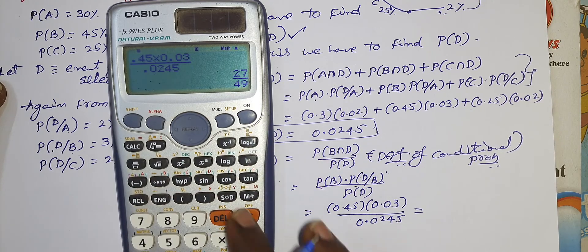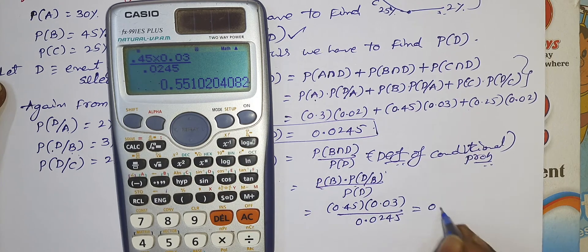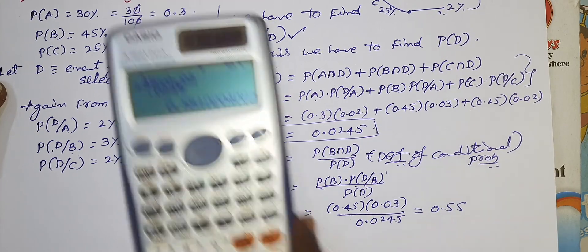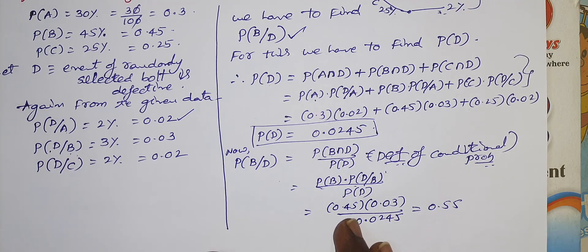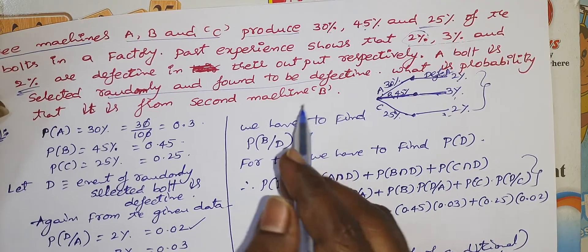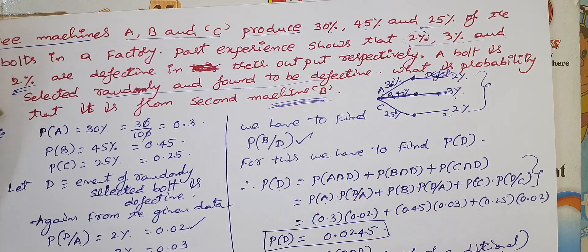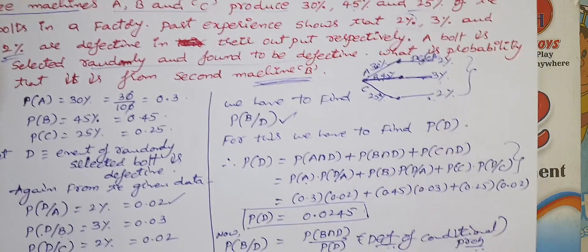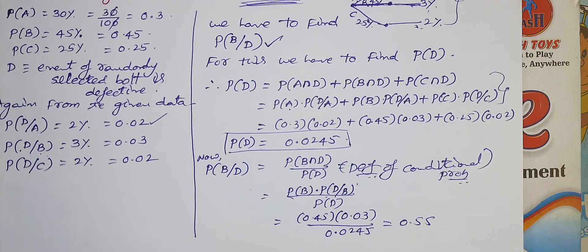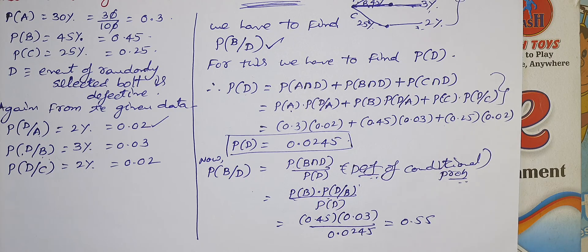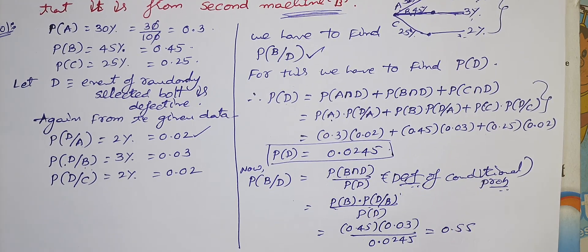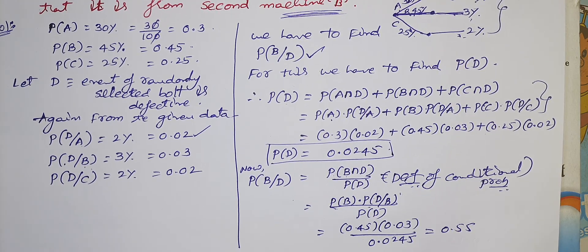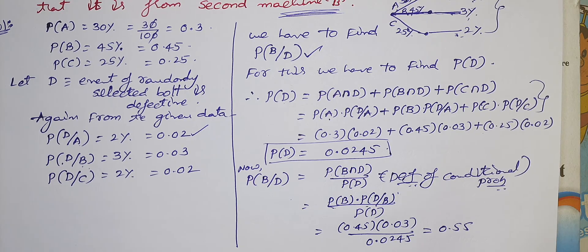The answer will surely be between 0 and 1. We get 0.55, which is 55%. There is around a 55% chance that the defective bolt came from machine B. That is the conclusion. This problem is very important, so please practice well. It is better to also prepare the Bayes theorem formula beforehand. Thank you very much.